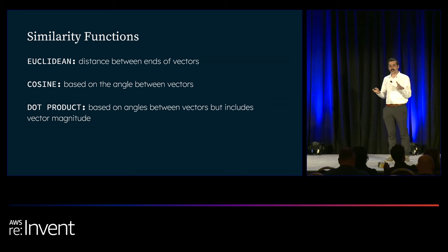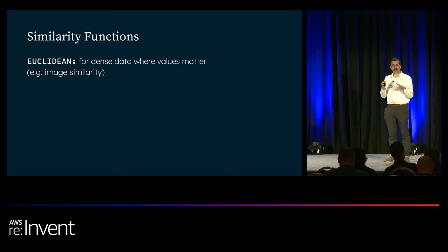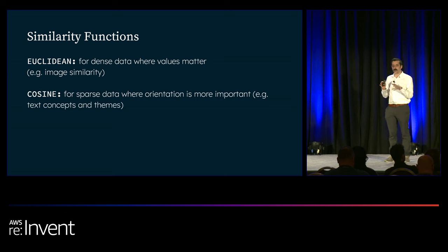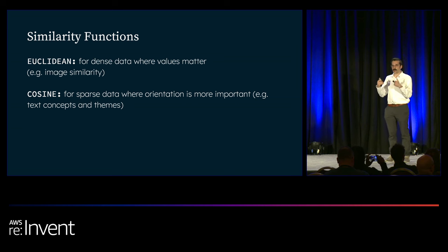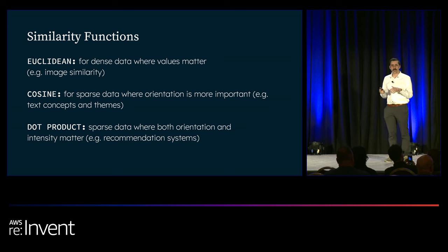What does this mean for an application? Euclidean we see customers primarily using for what we consider dense data, where values matter — things like image similarity, where the presence of one pixel in one image and that same pixel in another image could be highly related to those images being the same. Cosine is good for sparse data where orientation is more important — things like text concepts and themes, where the presence of one word within a sentence could be very important to the meaning of that sentence. And dot product is good for sparse data where both orientation and intensity matter, which we hear customers talking about with respect to recommendation systems and personalization.